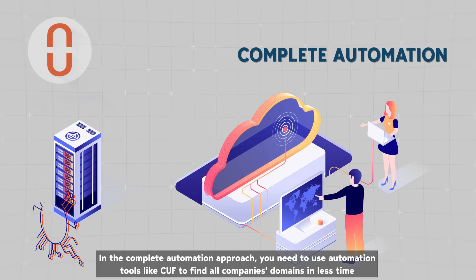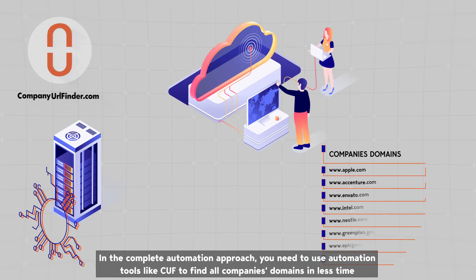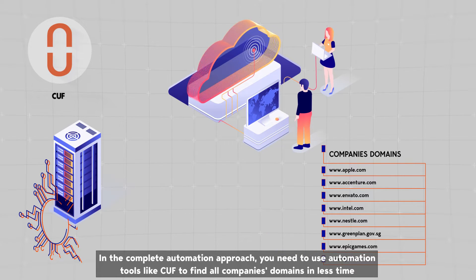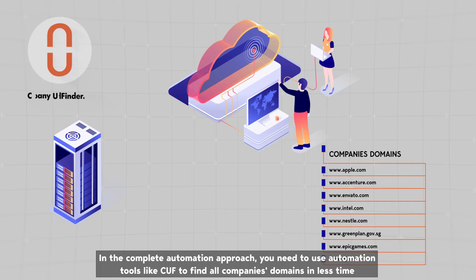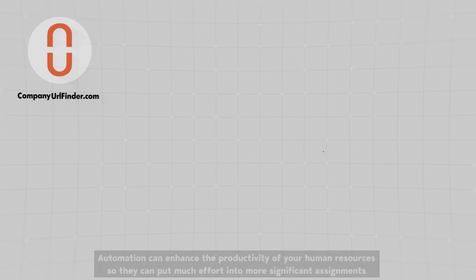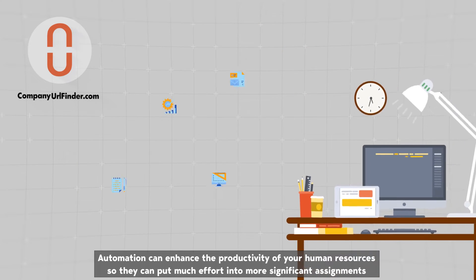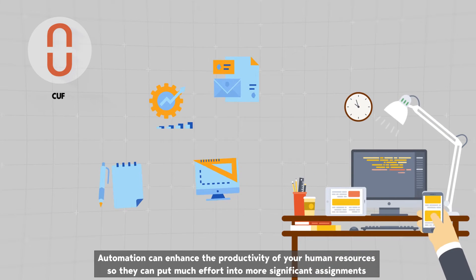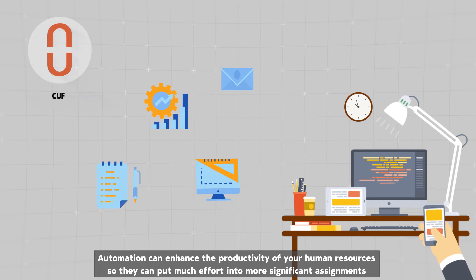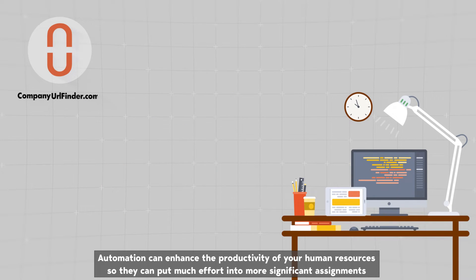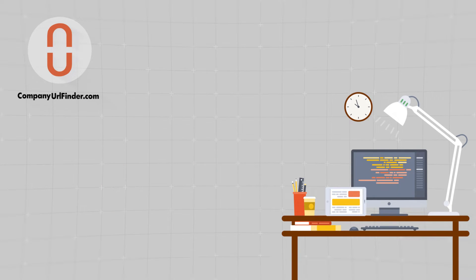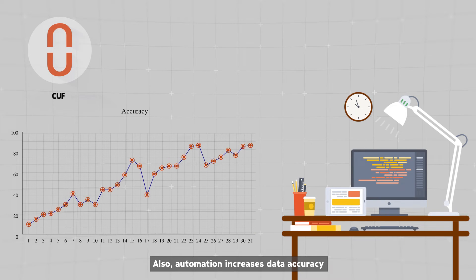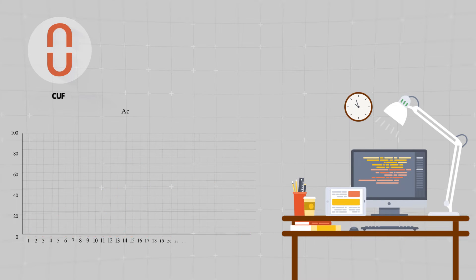In the complete automation approach, you need to use automation tools like CUF to find all companies' domains in less time. Automation can enhance the productivity of your human resources so they can put much more effort into more significant assignments. Also, automation increases data accuracy.